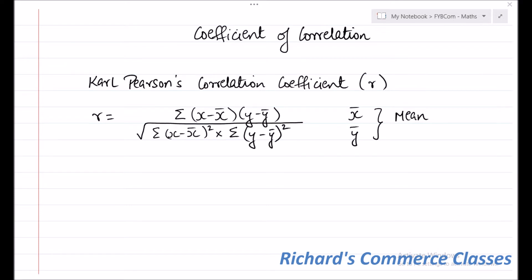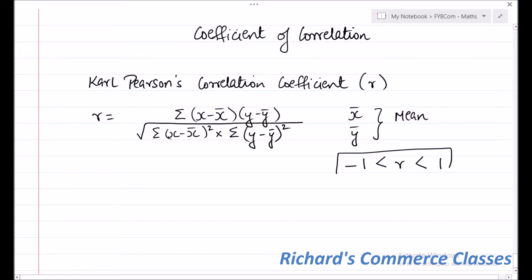The important thing to remember is that the value of R will always lie between minus one and plus one. Let's take an example to see how to calculate Carl Pearson's correlation coefficient.